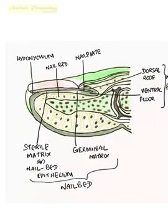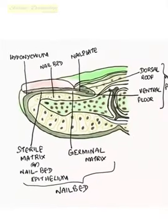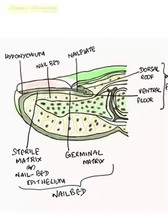The germinal matrix from the ventral floor contributes to 90 percent of nail production. The cells from the periosteum of the distal phalanx initially enlarge by a process called macrocytosis and then proceed upwards proximally towards the nail plate.